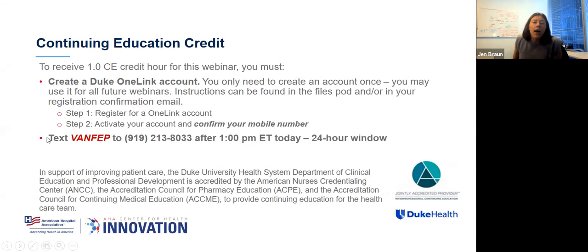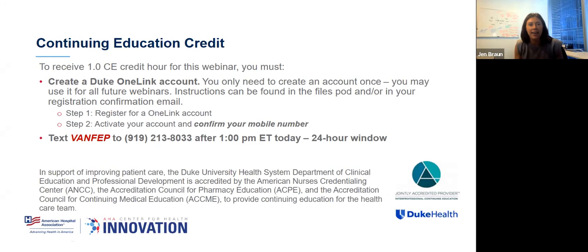This webinar is being recorded. If you have to step out or want to share with a colleague, it will be posted on our website and we'll notify all registrants. We're very happy to offer continuing education credit — one hour of CE credit. If you're new to us, you'll need to create a Duke OneLink account; Duke is our CE provider, and it's a one-time-only setup. After this webinar, text the code V-A-N-F-E-P to the phone number shown. You have 24 hours to do so, and we'll share it again at the end.